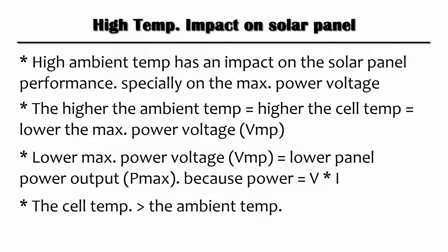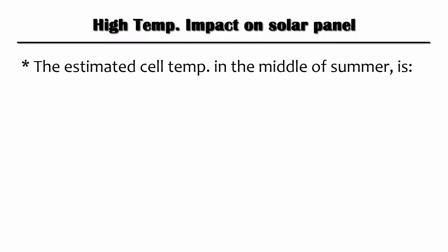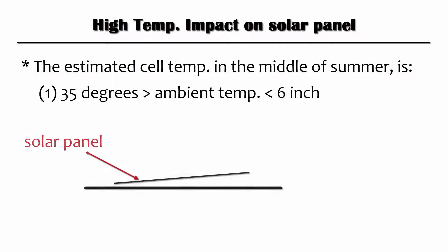The cell temperature, especially in summer, is much higher than the ambient temperature. The estimated cell temperature in the middle of summer, the hottest time of the year, is 35 degrees above ambient temperature if the distance is less than 6 inches between the back of the panel and the mounting surface.